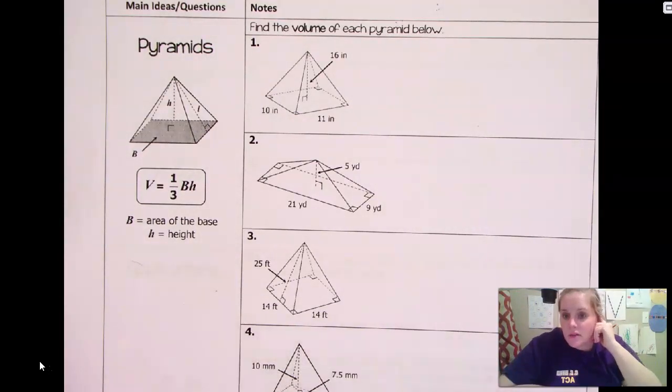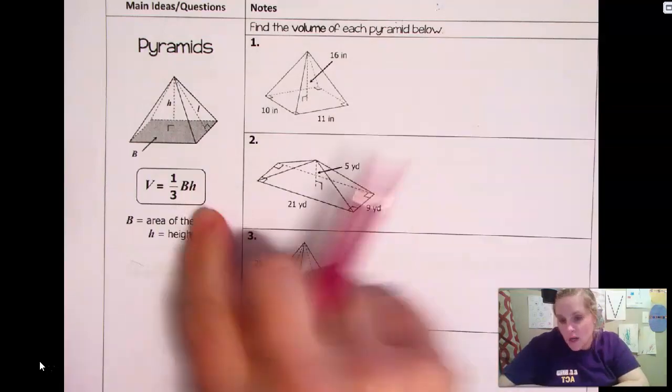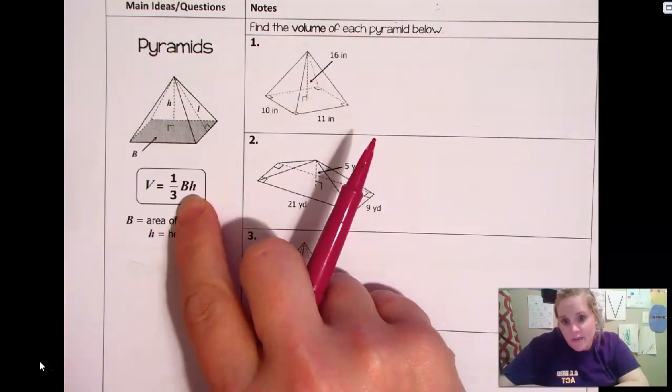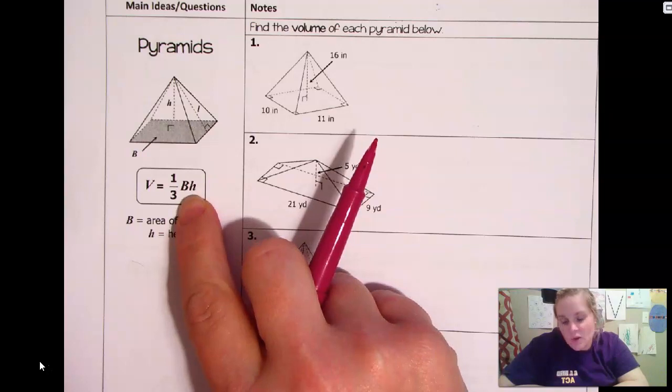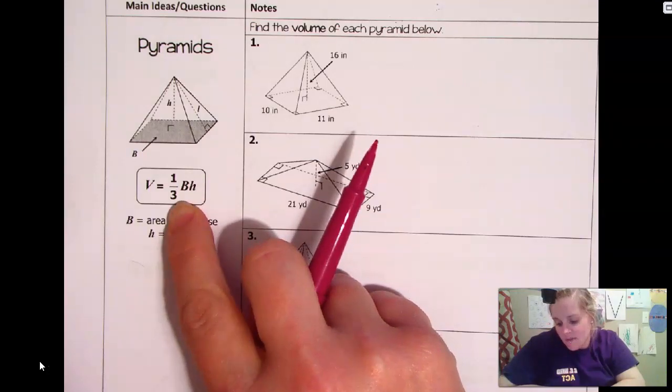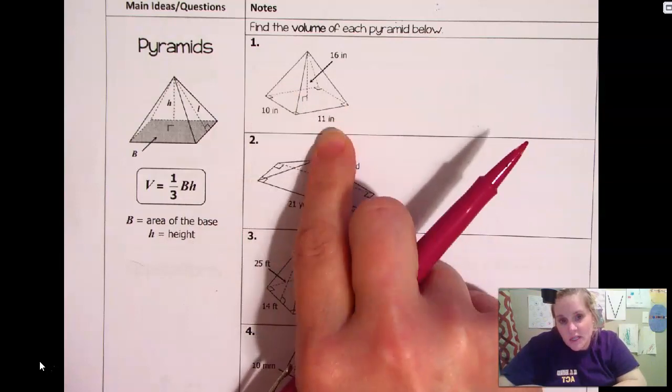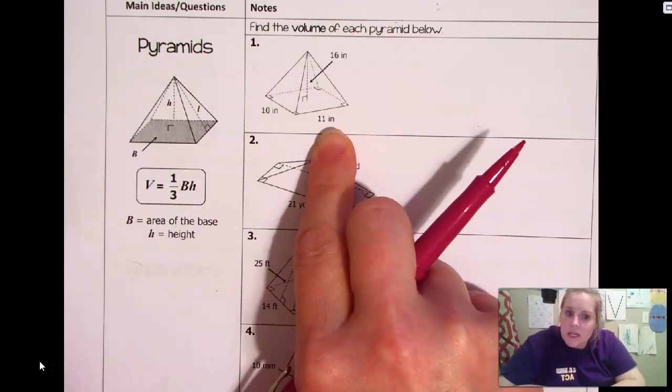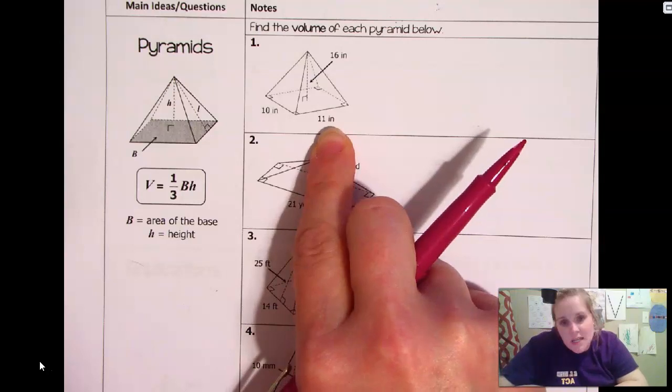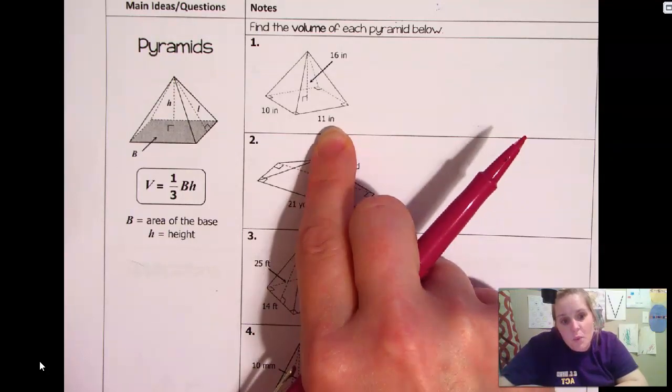Okay, so the volume of this. Okay, so we have a pyramid again. We're looking for the volume. The formula is still got that big B, which is the area of the base. The difference is it's one third. Okay. If this base right here is a rectangle, which it is, this would be like not an entire rectangular prism.